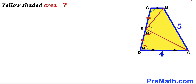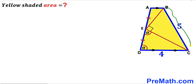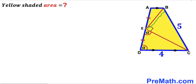Welcome to Premath. In this video we have got this yellow shaded quadrilateral ABCD as shown in the diagram, such that side AB is parallel to side CD. Side CD is 4 units long, side BC is 5 units. Segment AE equals segment DE, and segments BE and CE are fully confined in the yellow shaded quadrilateral such that this angle is 90 degrees, and angle CDE equals angle CED.